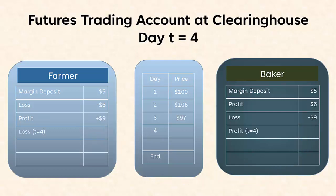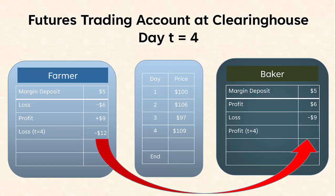If we continue with the example, we can see that the price fluctuates daily. On day T=4, it rises from $97 to $109, and that's a profit of $12 for the baker. The Clearinghouse transfers $12 to the baker's account. As we go through time, money will continue to go backwards and forwards on a daily basis between the Clearinghouse accounts of the two traders.